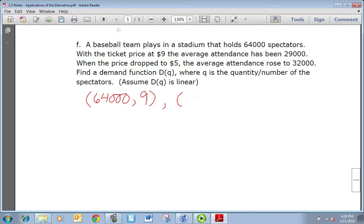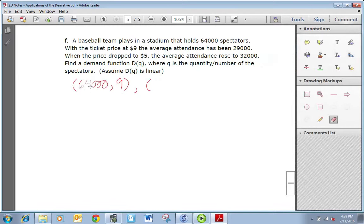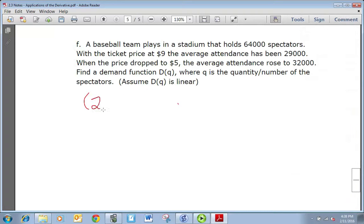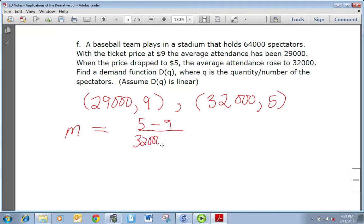The number of spectators is your independent and the price is dependent, so you get your two points: 29,000 for $9 and the other coordinate is 32,000 for $5. So we find m. m is going to be (5 - 9) over (32,000 - 29,000). Well, that's equal to -4 over 3,000, which reduces to -1/750.